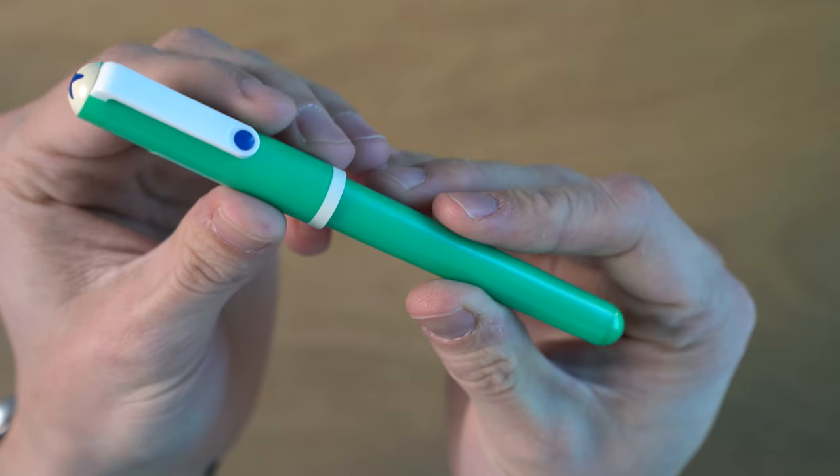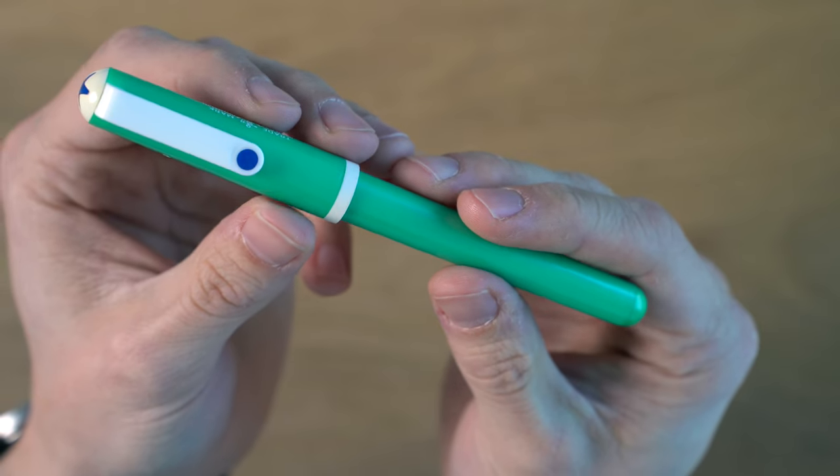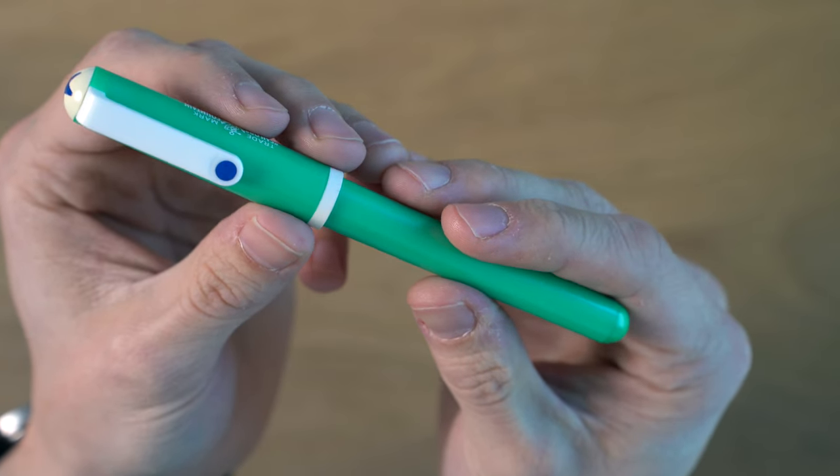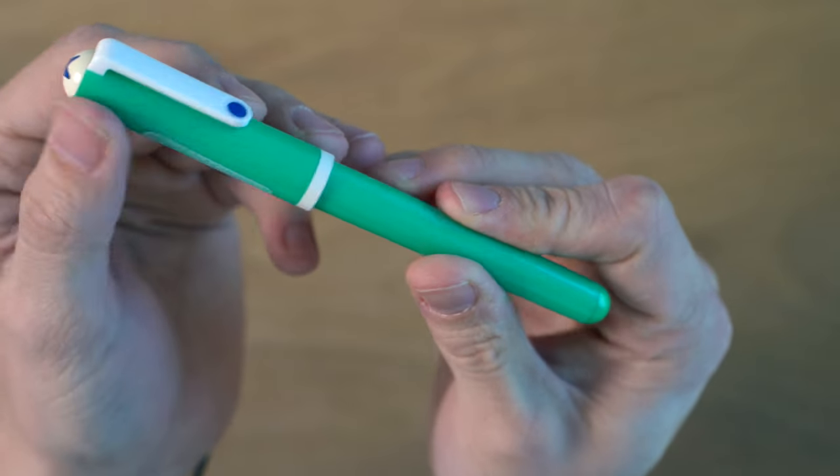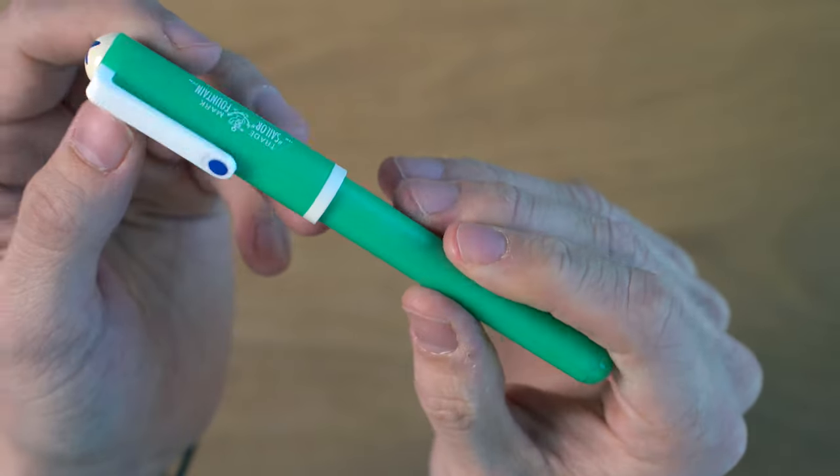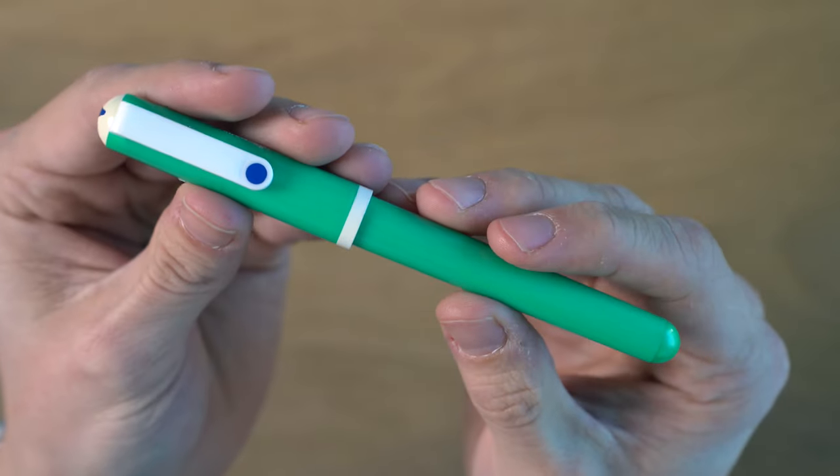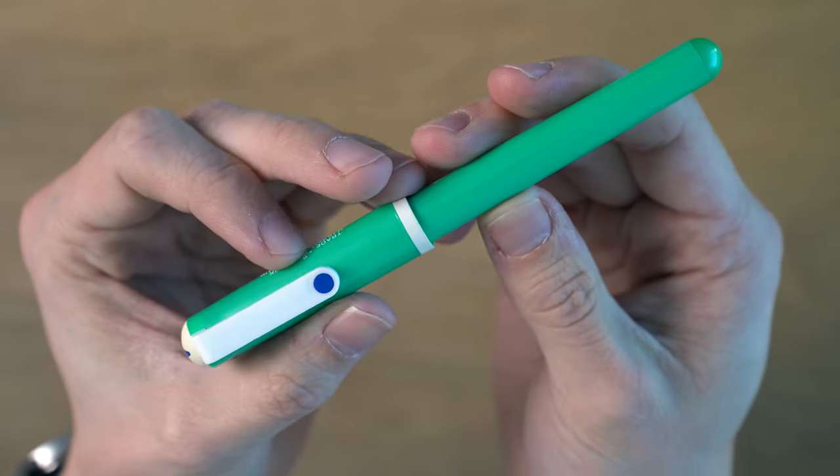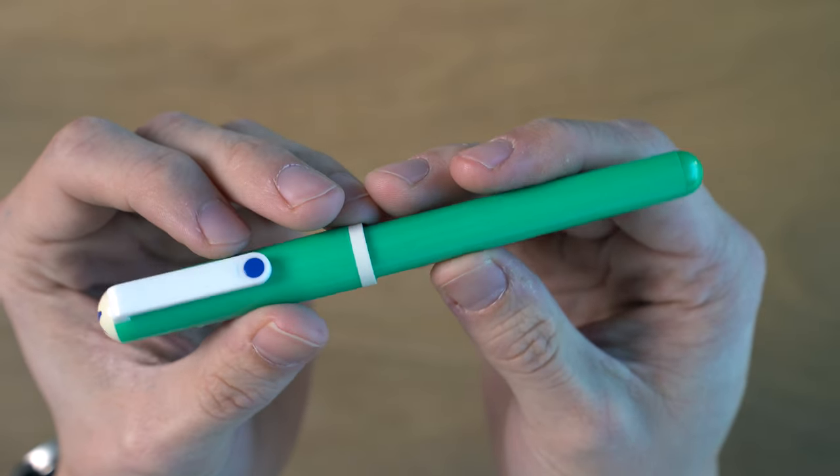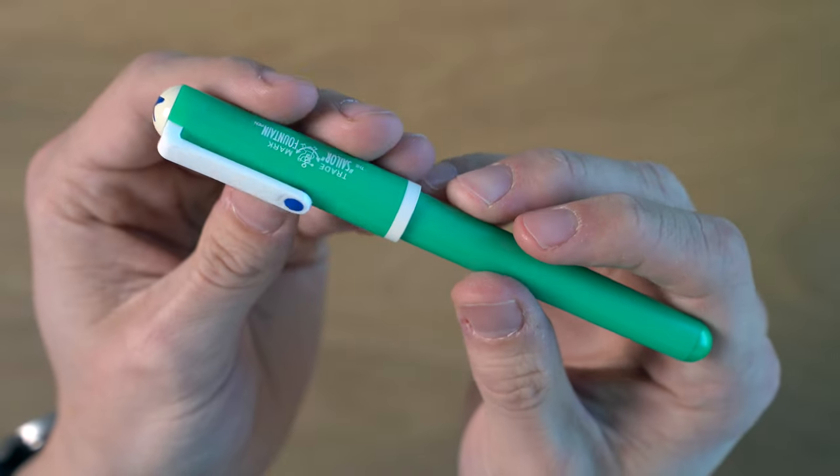This is the Sailor Candy Fountain Pen. The candy line was released, I believe, in 2011. And the reason I'm saying 2011 is because this pen was released to celebrate their 100-year anniversary, and they were founded in 1911. So this is an entry-level pen. It's all plastic body. They came in a lot of colors, just a huge variety with different patterns. And the bold colors, I think, are really the big feature of this pen.